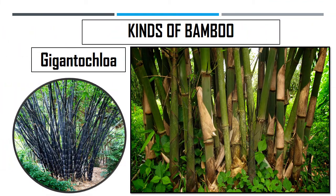Another kind is Gigantochloa. This is what Gigantochloa looks like. It reaches a height of 43 meters and has a width of 50 millimeters. It is used for water pipes, fish traps, and as a wall for houses.